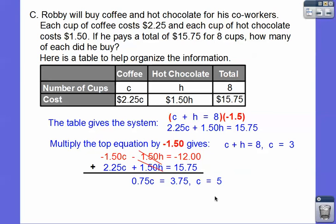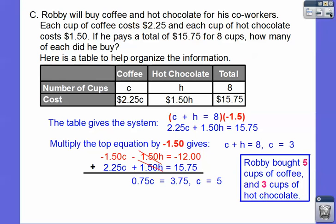I'm sorry, you know, you get what I mean. So 5 plus H, C equals 3. You get what I'm talking about, a little tongue twister right there. So answer the question, Robbie bought 5 cups of coffee and 3 cups of hot chocolate.